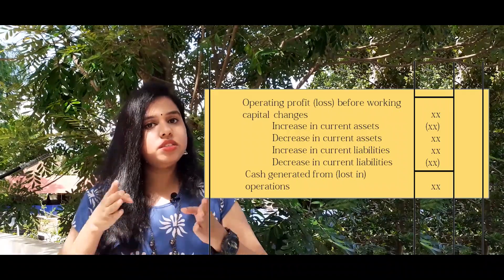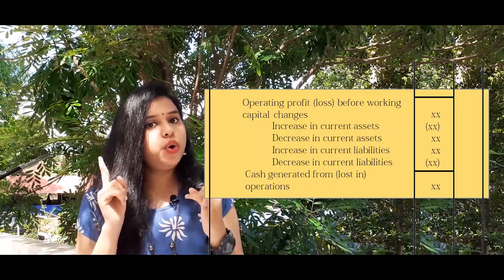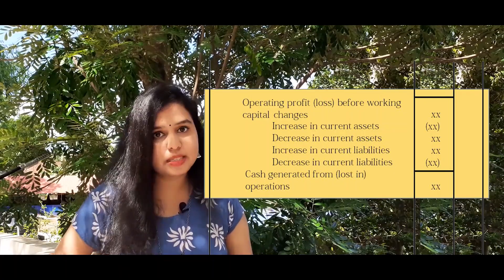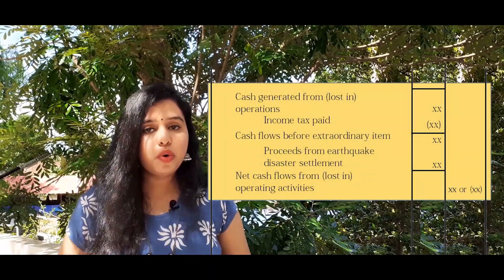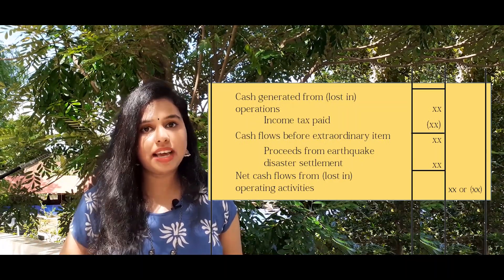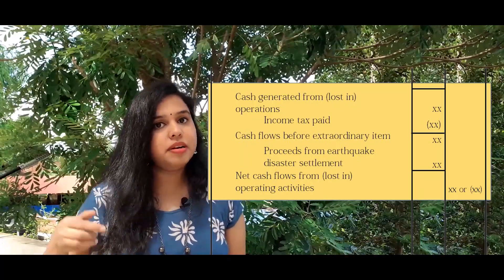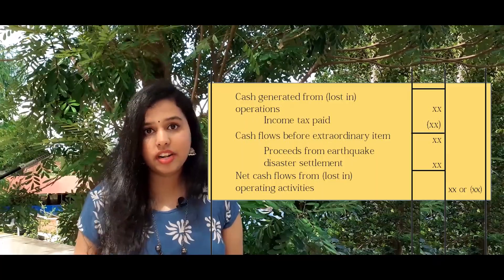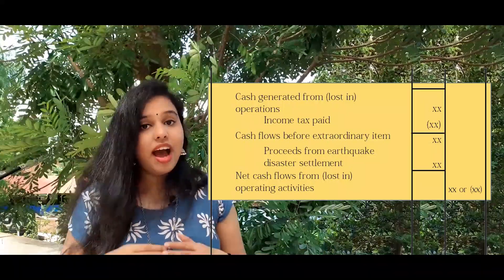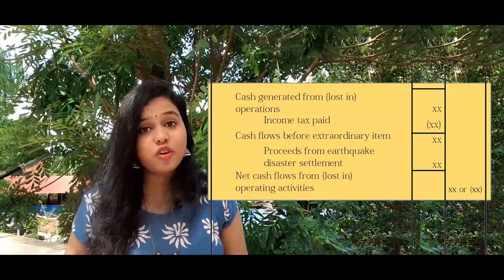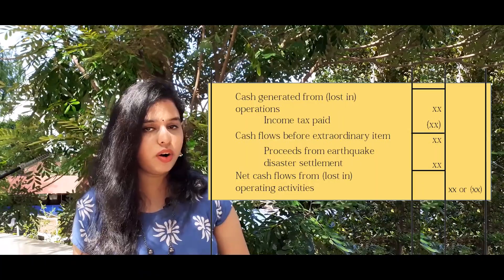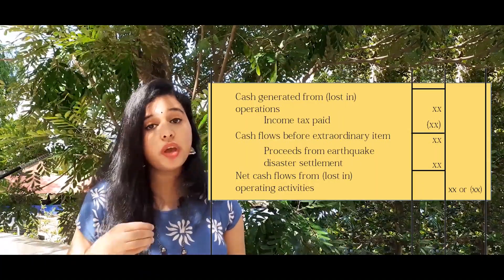NOCC — cash generated from operations. We then deduct income tax paid to get cash flow before extraordinary items. If the answer is negative, we call it a loss in operations. We then add extraordinary items — such as proceeds from earthquake or disaster settlements — to get cash flow before extraordinary items.